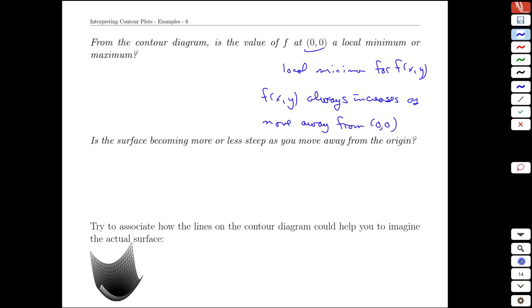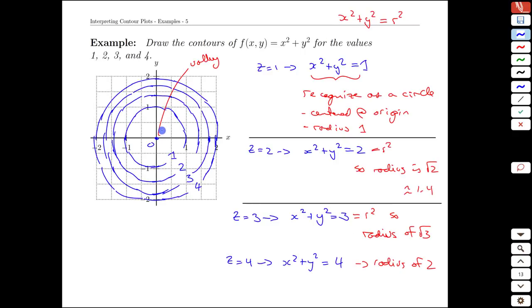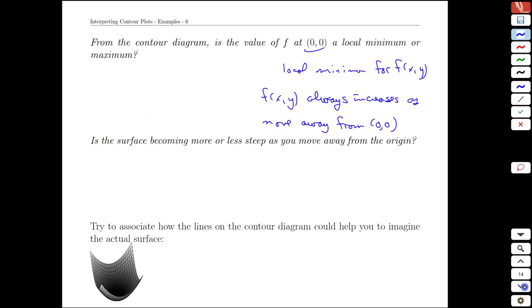Is the surface becoming more or less steep as we move away from the origin? Again, we can answer that by looking at the step size between the contours. The more densely packed the contours, the steeper the curve. Here it takes us a full step to get to one higher elevation, and then about 0.4 to get to the next highest, then about 0.3 and a little under 0.3. So the contours are getting closer together as we move away from (0, 0), and that indicates that the surface is getting steeper as we make our way in that direction.